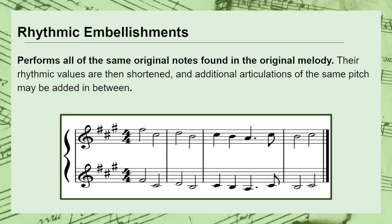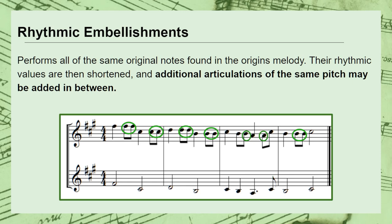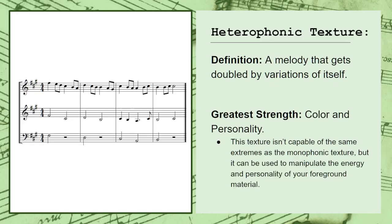A rhythmic embellishment also performs all of the same original notes at the same time, however their rhythmic values may be shortened and additional articulations of the same pitch may be added. Typically these tend to be straight rhythms — for example, straight eighth notes or straight sixteenth notes — but original and unique rhythmic motifs may be introduced as well. Regardless of which strategy you take, the whole point of a heterophonic texture is to add a bit more color and personality to your melody. It's not capable of the same levels of power or intimacy as a pure monophonic texture, but it can be used to great effect to manipulate the energy and personality in your foreground material. To write a heterophonic texture, simply start with your original melody, decide what kind of variations you want to write, then try adding them one at a time until you've created the sound you're looking for.